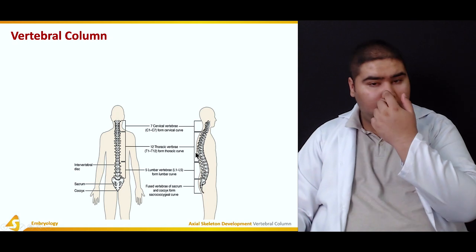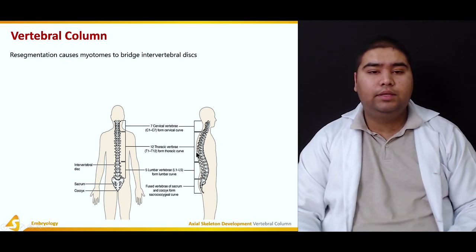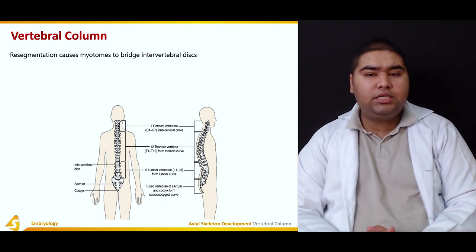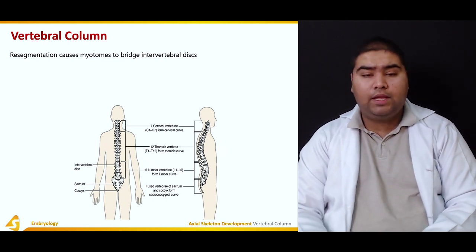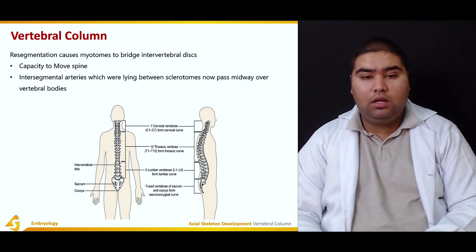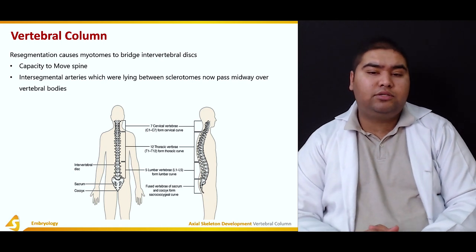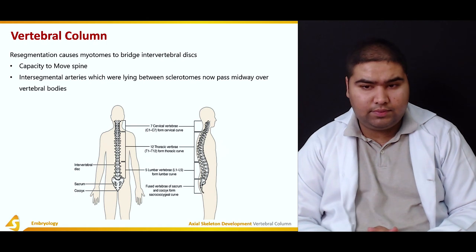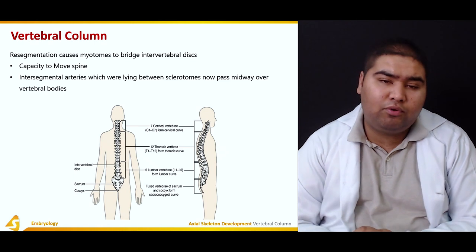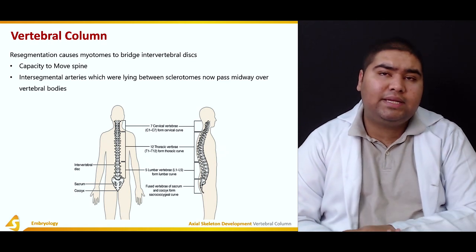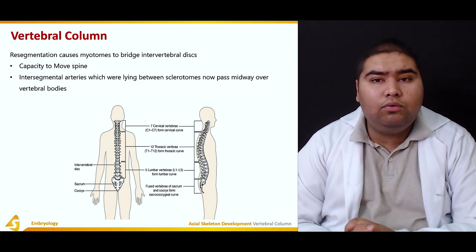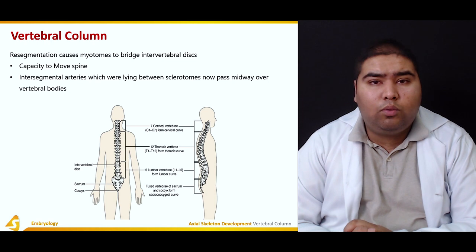Regarding the vertebral column: resegmentation causes myotomes to bridge intervertebral discs, which gives the spine the capacity to move. Intersegmental arteries, which were initially lying between the sclerotomes, now pass midway over the vertebral bodies. This is an important aspect to understand.